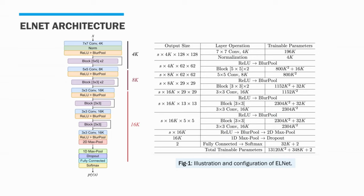Aggregation is performed by max pooling the stacked feature vectors to obtain a single feature vector representing the whole volume. This single feature vector is fed into a fully connected layer and the output logits are fed into softmax to obtain the class probabilities. In the above diagram, 4k, 8k, and 16k refer to the channel dimensions and k is a hyperparameter.